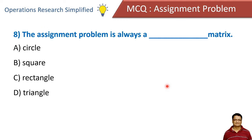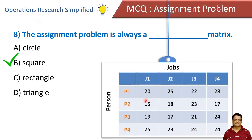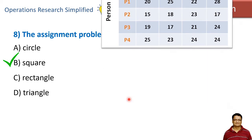The assignment problem always has a square matrix — the number of rows is always equal to the number of columns. So the assignment problem is always a square matrix.